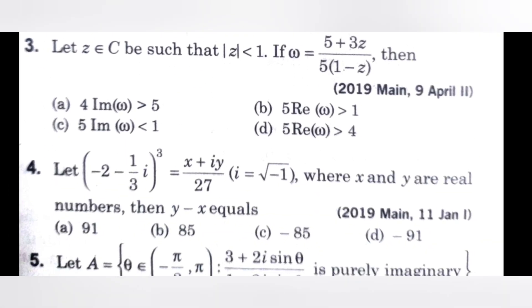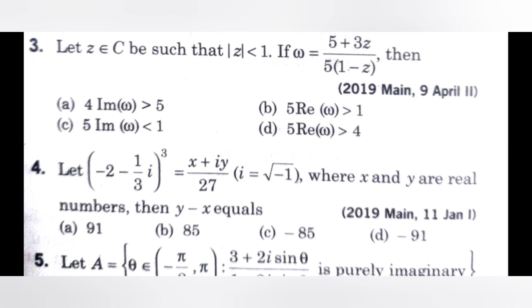Now go for the next question, fourth one. Let minus 2 minus 1 by 3 times i whole power 3 equals X plus iY divided by 27. Here i equals root minus 1, where X and Y are real numbers. Then Y minus X equals to.